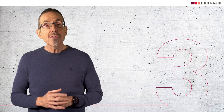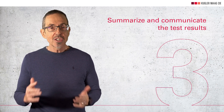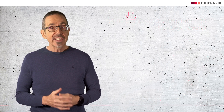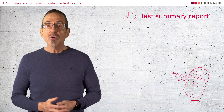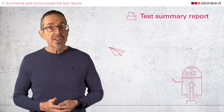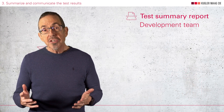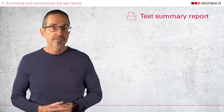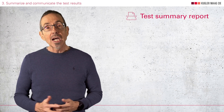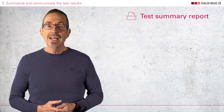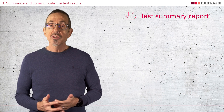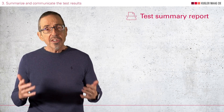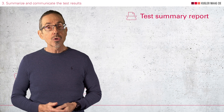Coming to point number three: summarize and communicate the test results. This is usually referred to as a test summary report, and this summary report should be sent to the people who need this information, such as the development team, project manager, quality engineers, and so on. Let's take a closer look at how this report should look. It should summarize the results and hide unnecessary details. The main message the summary report should convey is, of course, compliance with the detailed design.